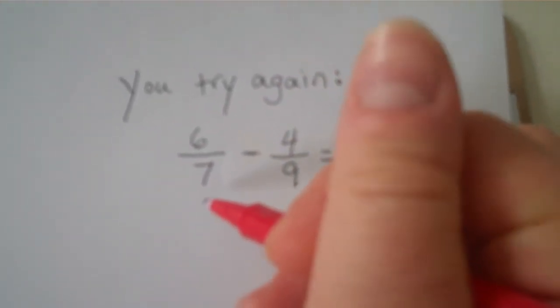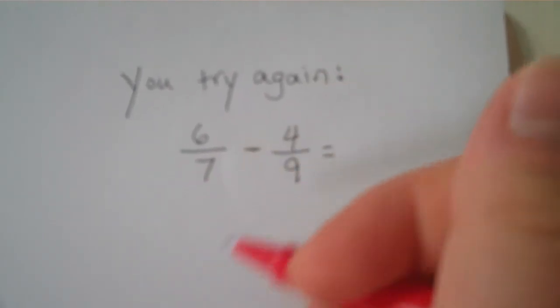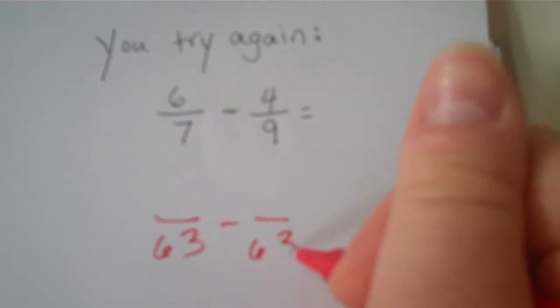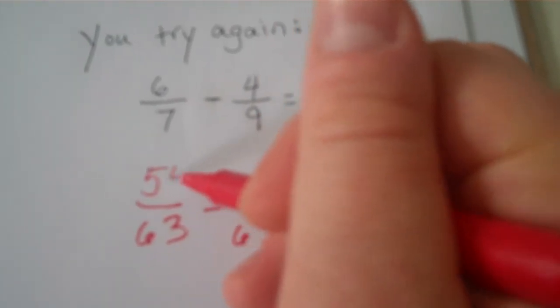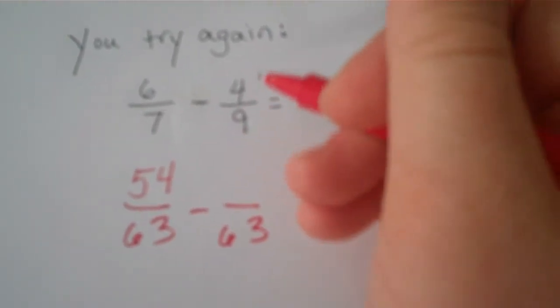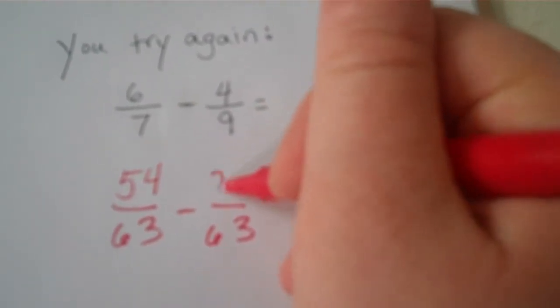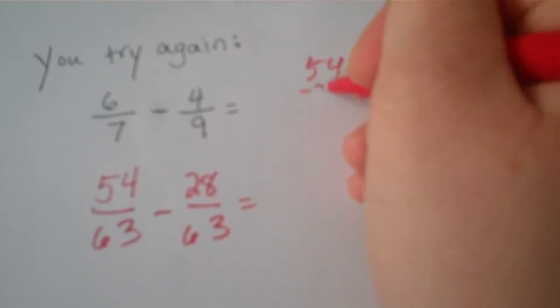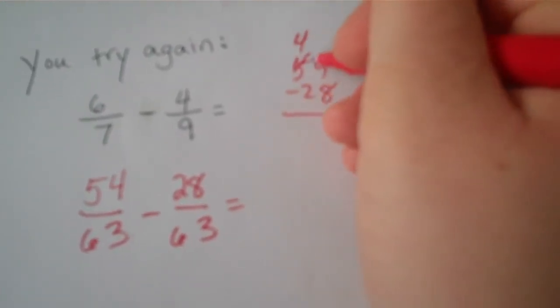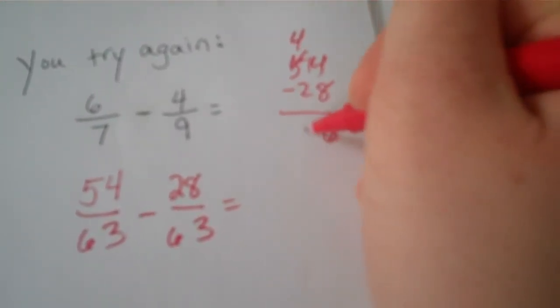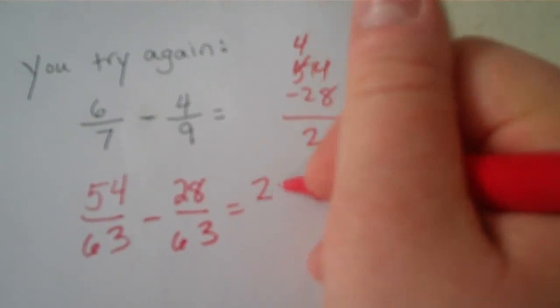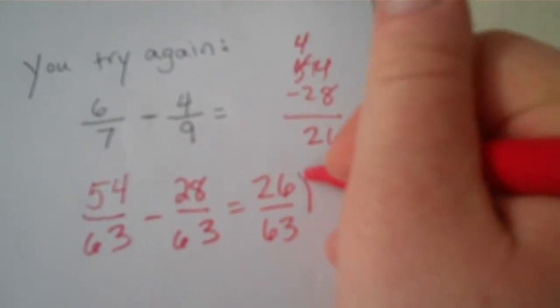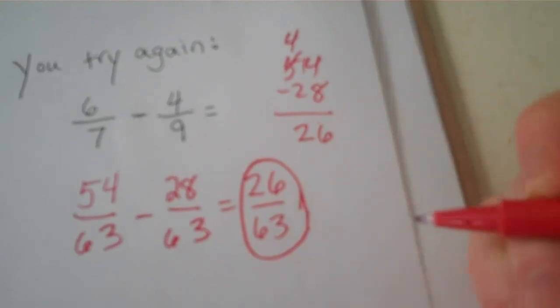Here's how you solve. The common denominator for seven and nine is going to be sixty-three. Six sevenths is fifty-four sixty-thirds, and four ninths is twenty-eight sixty-thirds. Fifty-four minus twenty-eight is twenty-six. So twenty-six sixty-thirds is my answer.